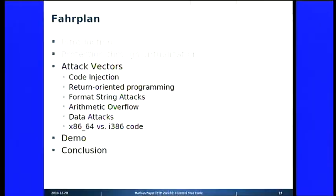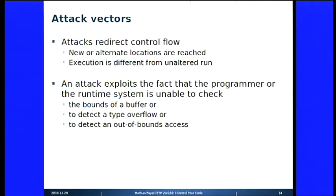That was the introduction to the virtualization system. All the attack vectors we will discuss redirect control flow in one way or another — new or alternate locations of code are reached that would not be executed in an unaltered run. We either inject new code, alter the control flow to new code, or do some other computation that changes the program. Every attack exploits the fact that the programmer or runtime system was unable to check specific facts, such as buffer bounds, type overflows, type underflows, or out-of-bounds memory accesses.